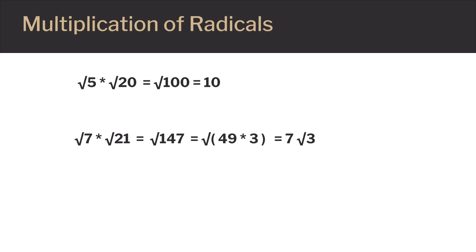We now have to look to see if we can simplify this answer. We would like to break down the square root of 147 as the product of a perfect square and another factor. After some checking, 49 is a perfect square and it can be brought out of the radical. Thus, our final answer is 7 square root of 3.